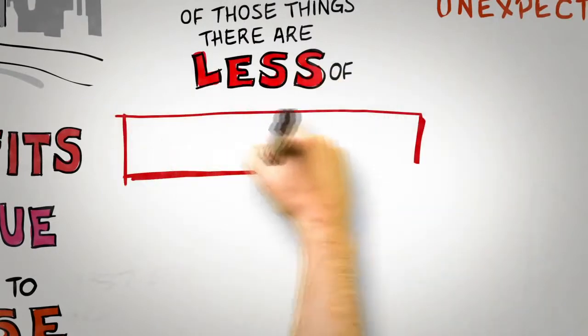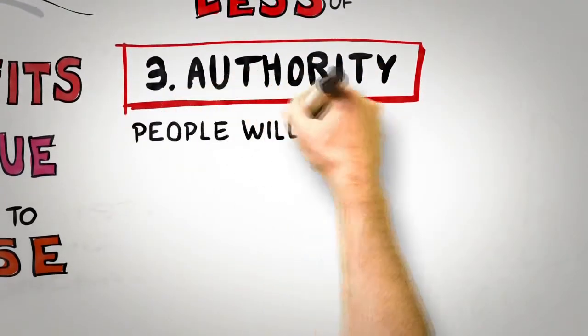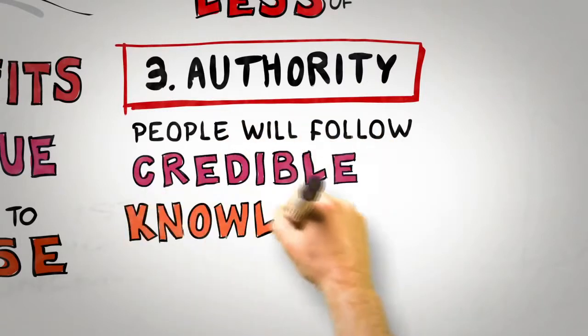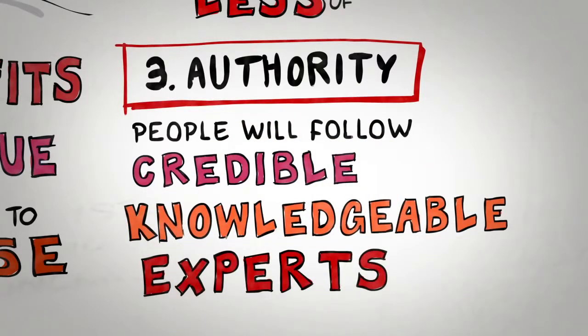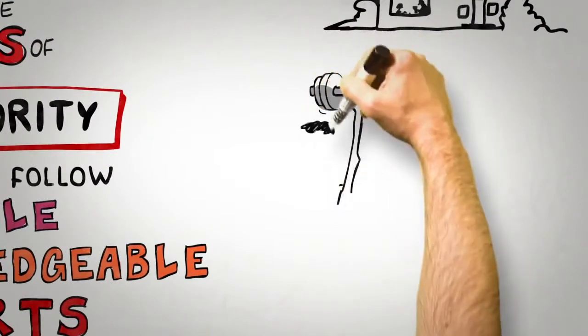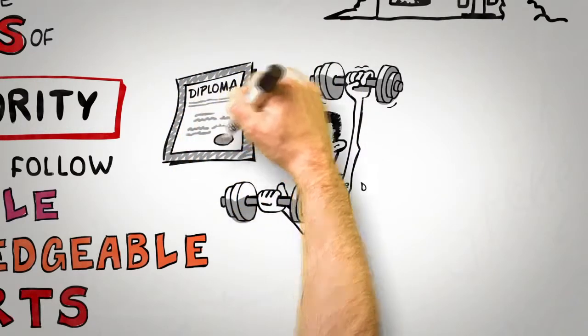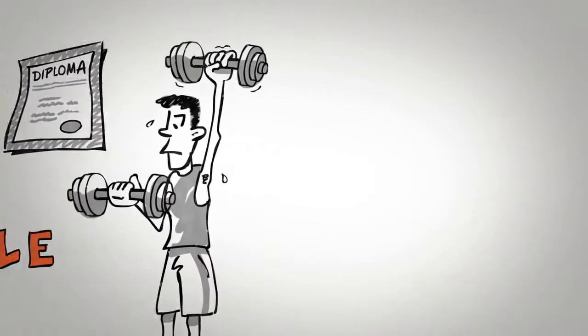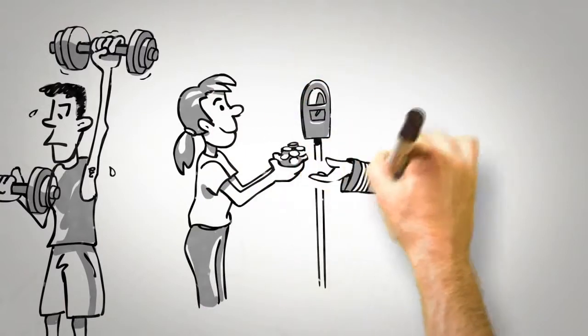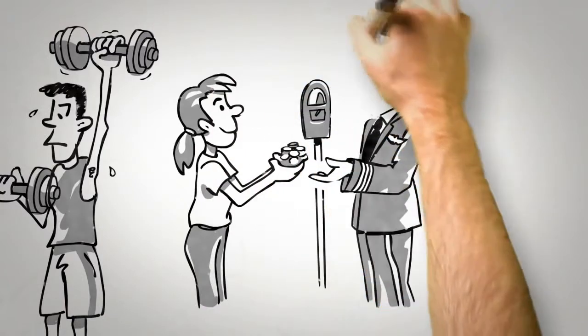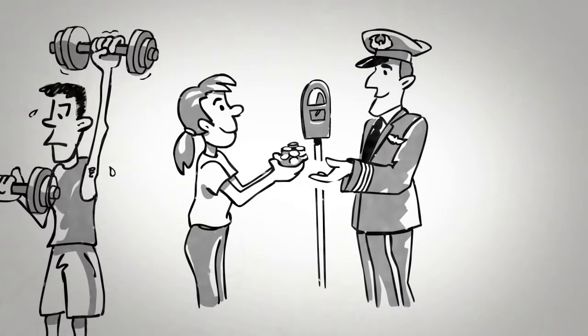Our third principle of influence is the principle of authority, the idea that people follow the lead of credible, knowledgeable experts. Physiotherapists, for example, are able to persuade more of their patients to comply with recommended exercise programs if they display their medical diplomas on the walls of their consulting rooms. People are more likely to give change for a parking meter to a complete stranger if that requester wears a uniform rather than casual clothes. What the science is telling us is that it's important to signal to others what makes you a credible, knowledgeable authority before you make your influence attempt.